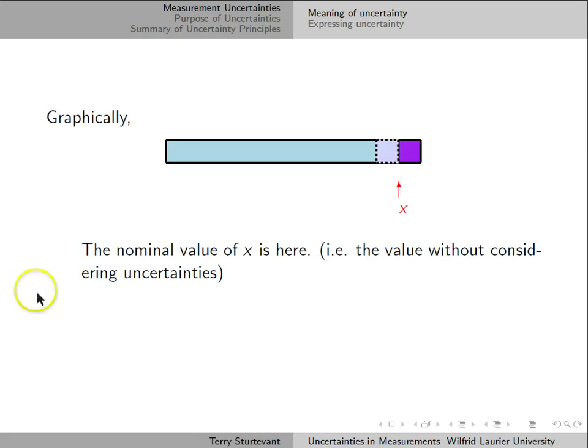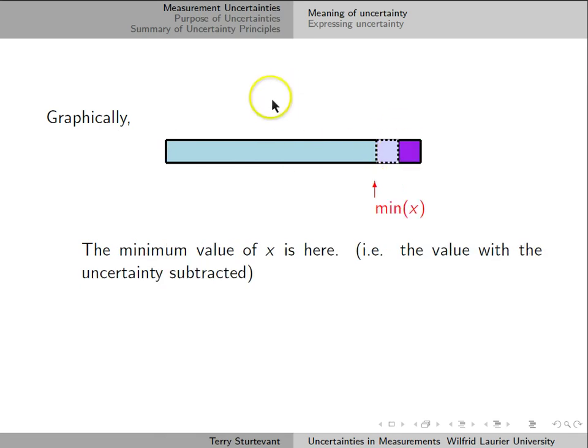To show it graphically, suppose we have this quantity x, and x goes from this left end of this bar over to this point in the middle. The minimum value x can have is from the middle over to here.